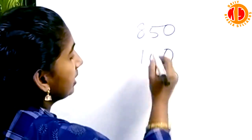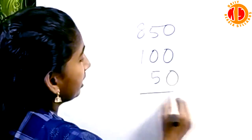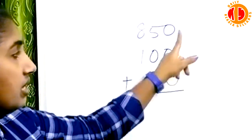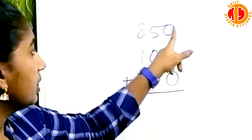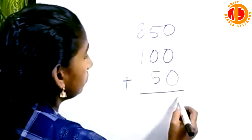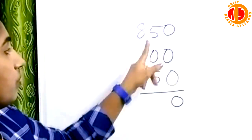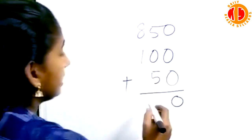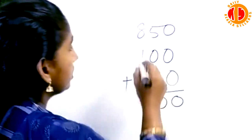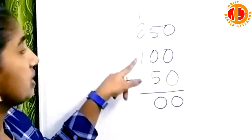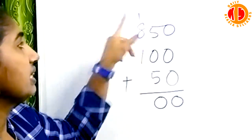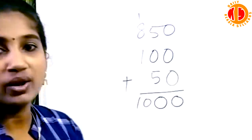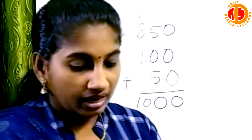1 splice is 0. 10 splice is 5. Here is 50. 5 plus 0 is 5. 5 plus 5 is 10, carry 1. 8 plus 1 is 9. 9 plus 1 is 10. 1 minus 10 is 10. That's the only answer.